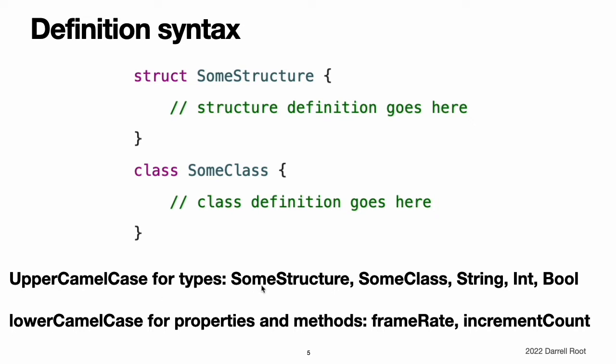Give types upper camel case names, such as SomeStructure and SomeClass, to match the capitalization of standard Swift types such as String, Int, and Bool. Give properties and methods lower camel case names, such as frameRate and incrementCount, to differentiate them from type names.